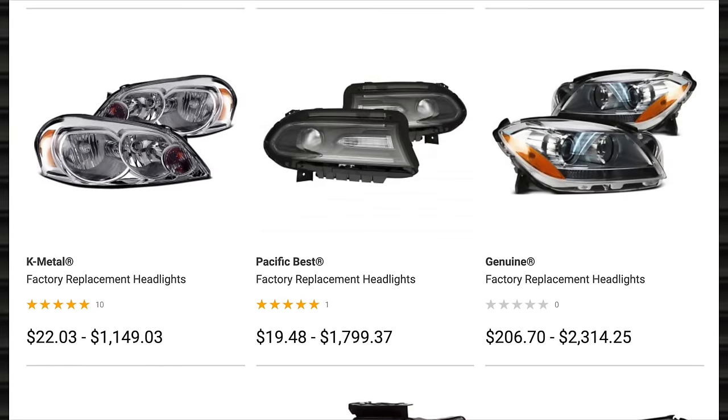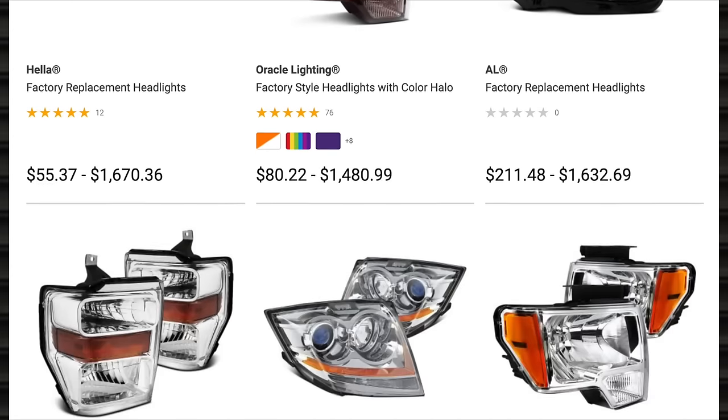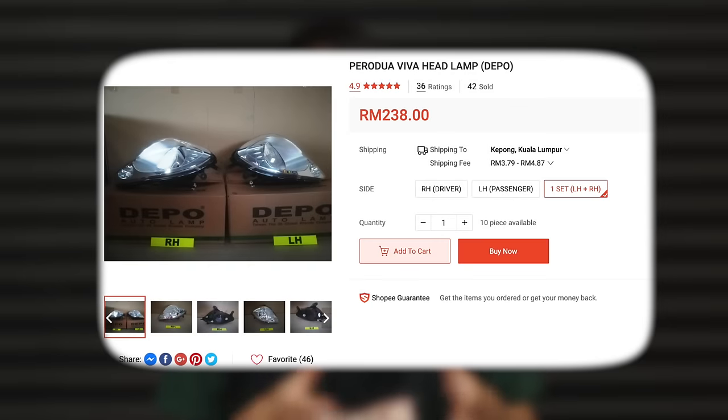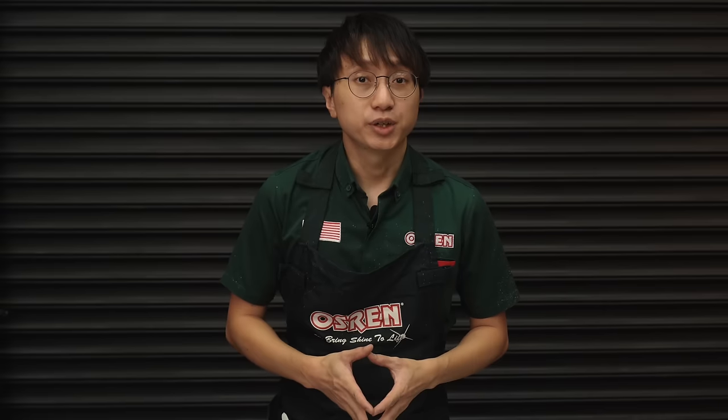It's also worth considering the replacement cost of a new headlight. Depending on the car make and model, it may be cheaper to source for an aftermarket light than to restore. For example, the headlights on this Proton Viva can cost as low as 50 US dollars per pair. It really depends on the budget you have at hand. I'll be monitoring the durability of these solutions. One is a sprayed on clear coat, the other is a ceramic coating. Stay subscribed for a follow-up video on the durability of these finishes.